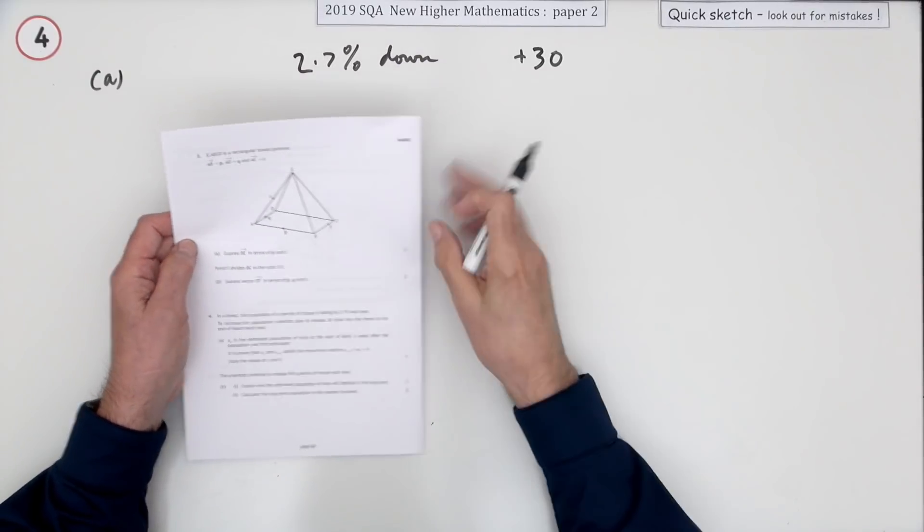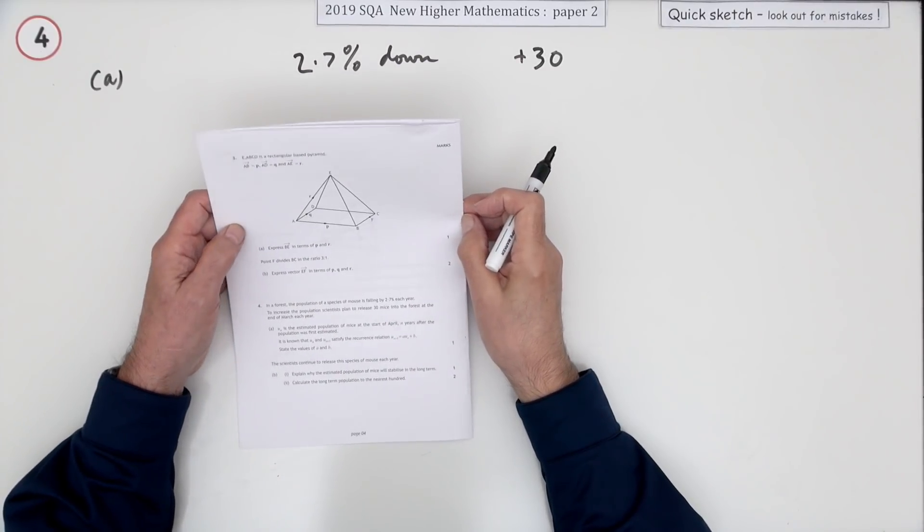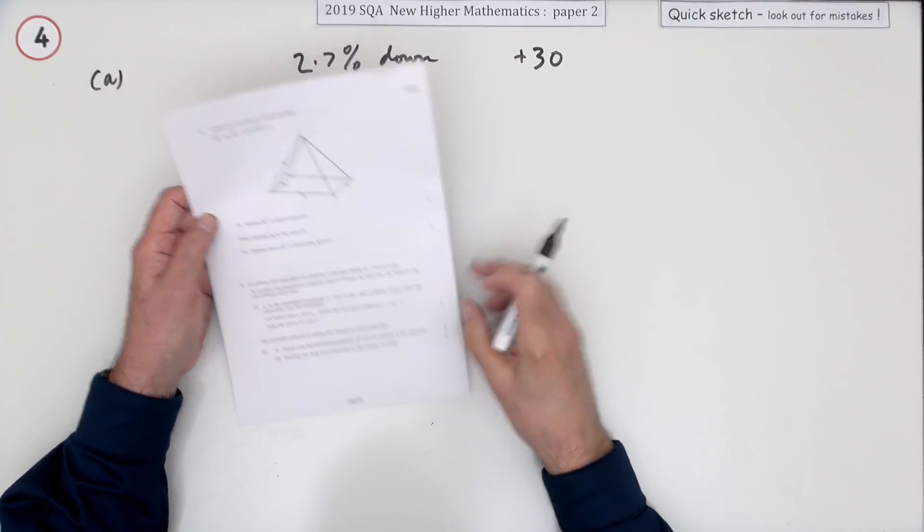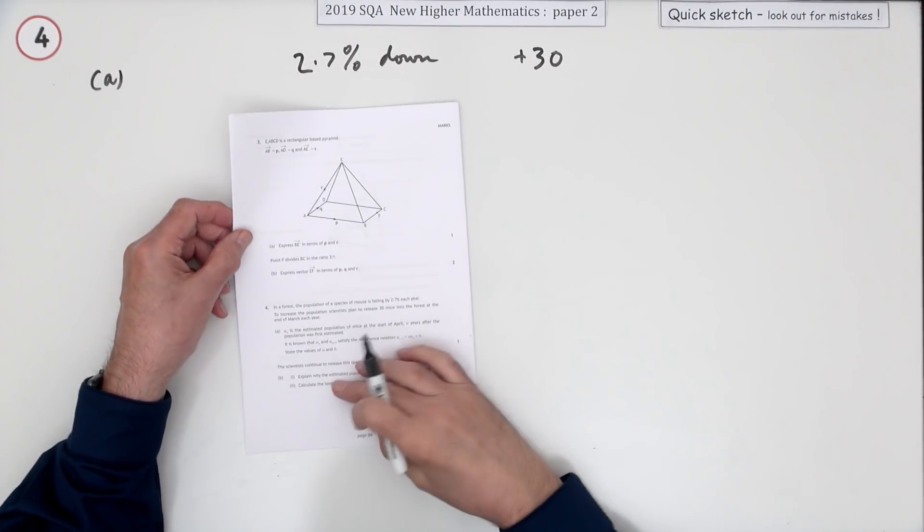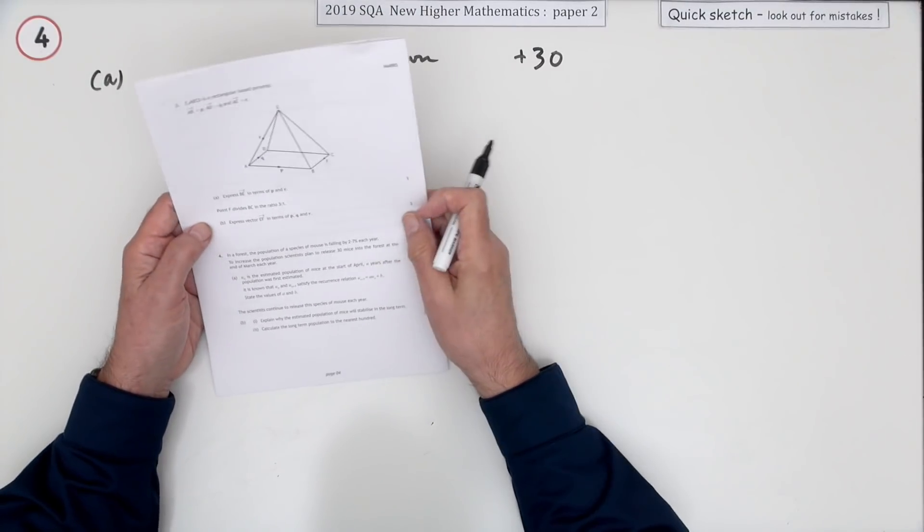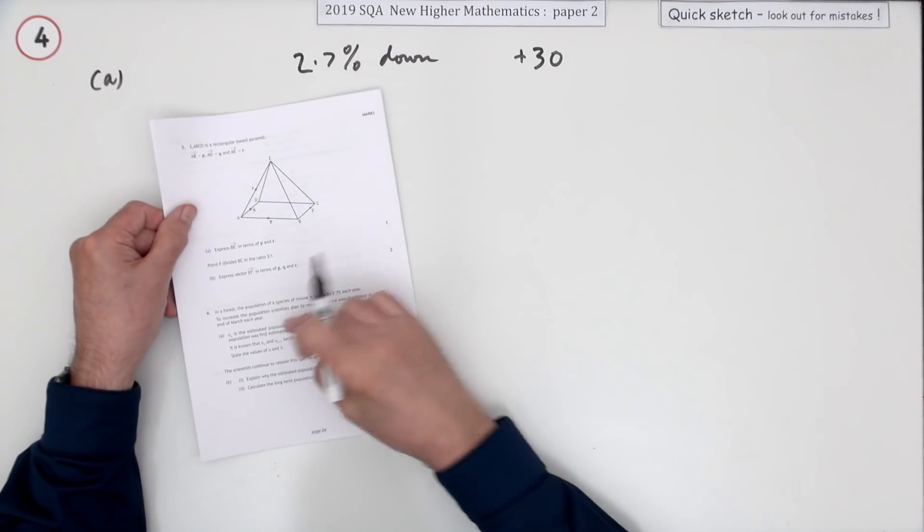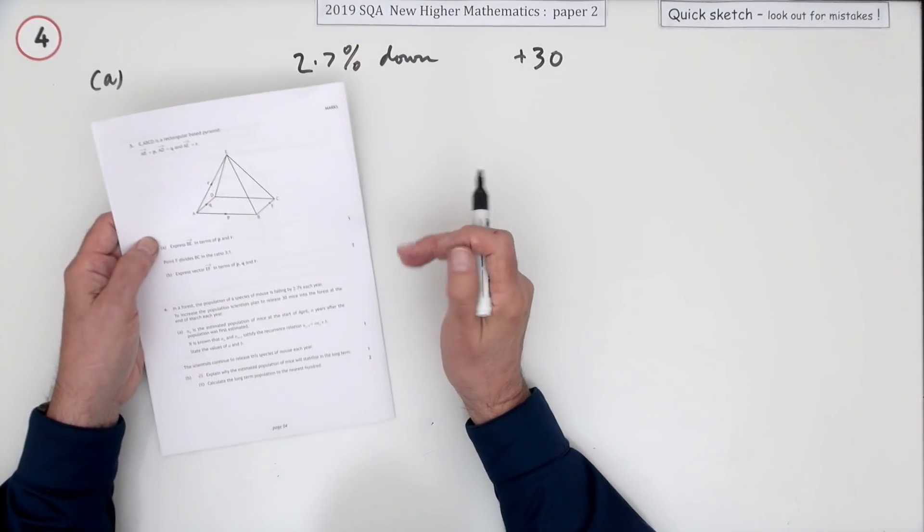Number four from the 2019 higher paper, two, just four marks, looks like a recurrence relation again, big wordy question. Well it's just a case of reading it to see what story they've concocted up this time.